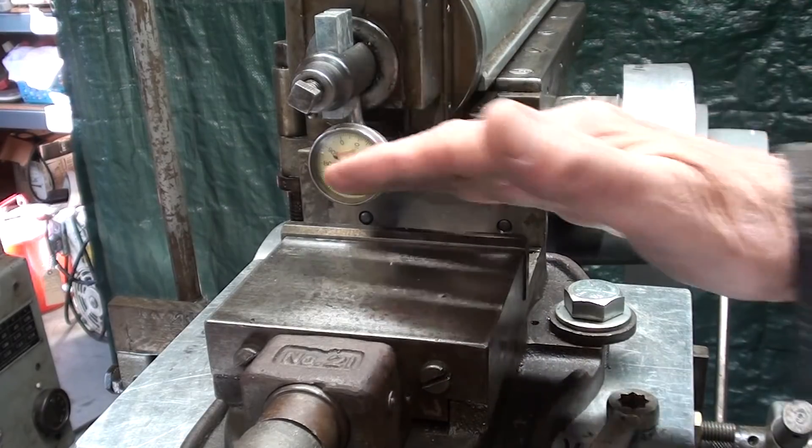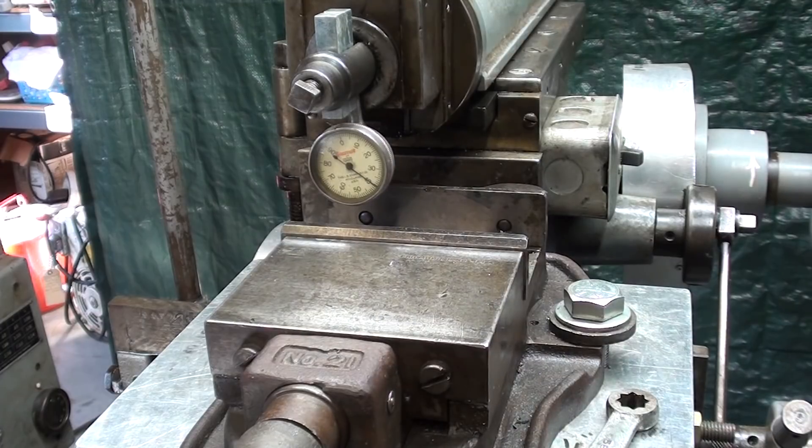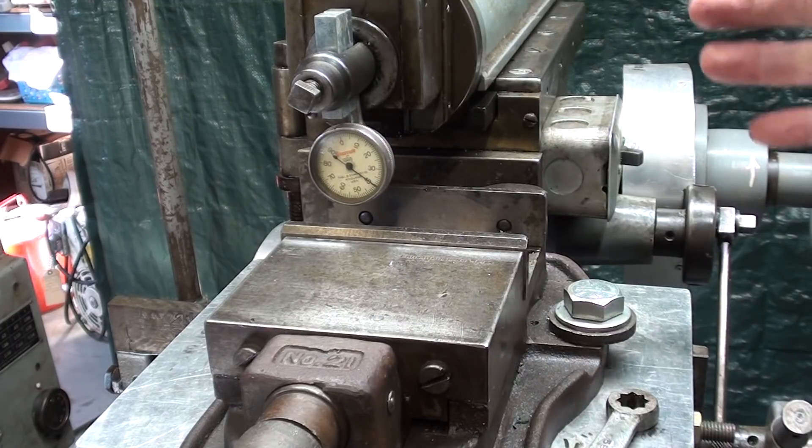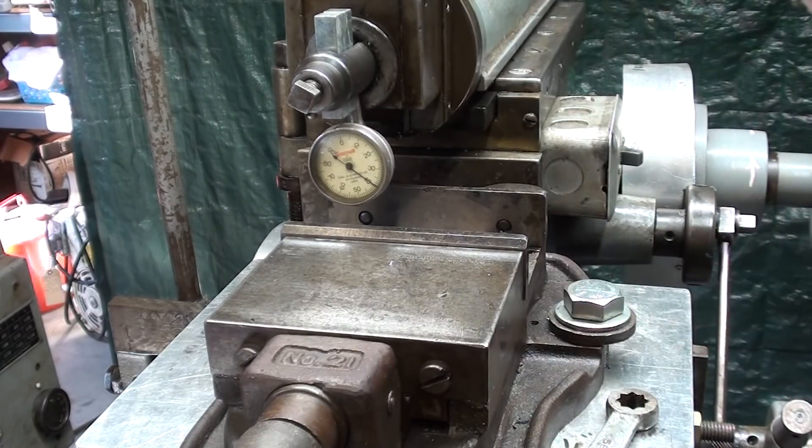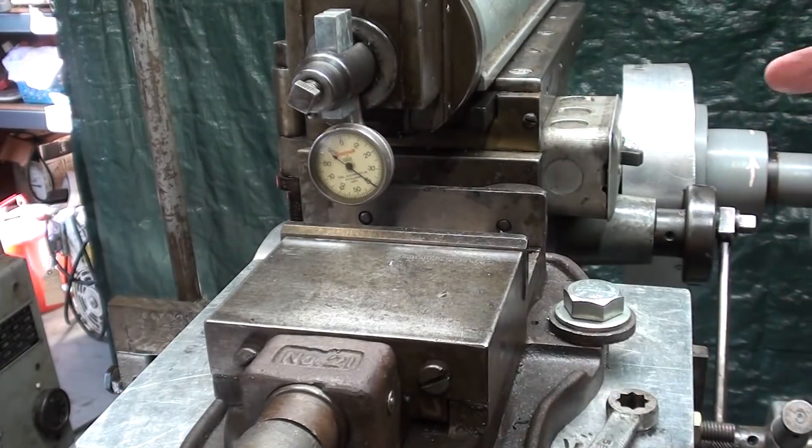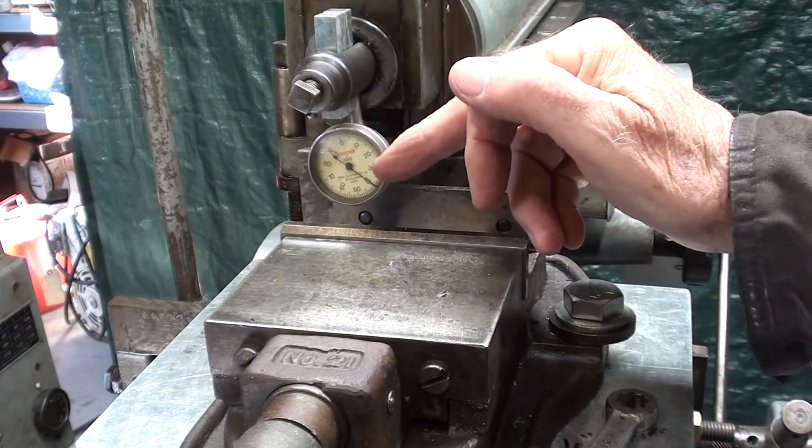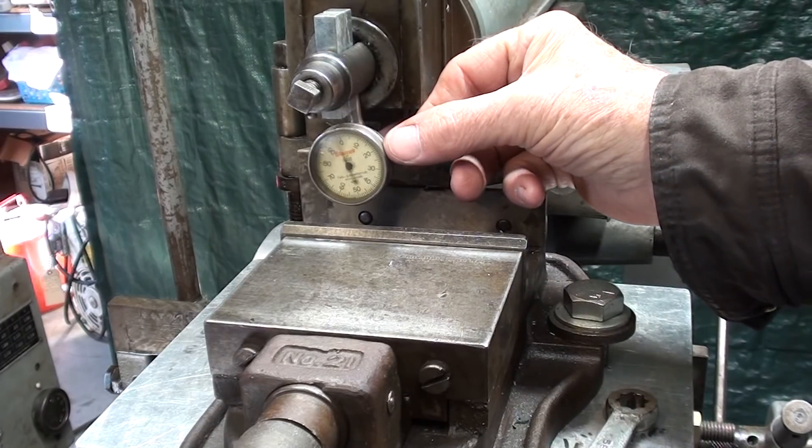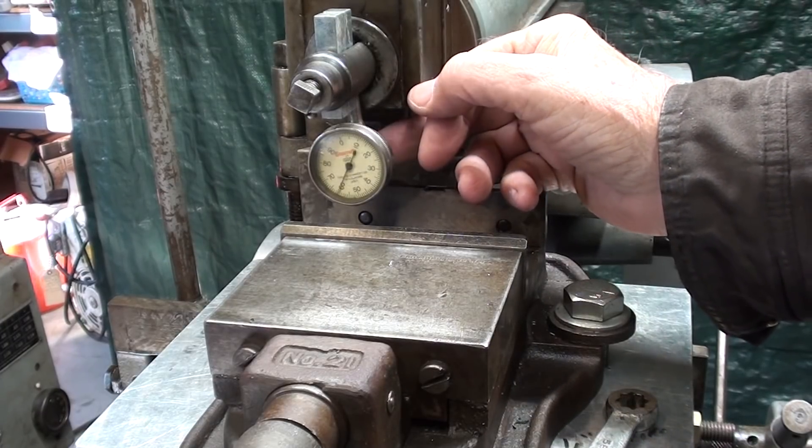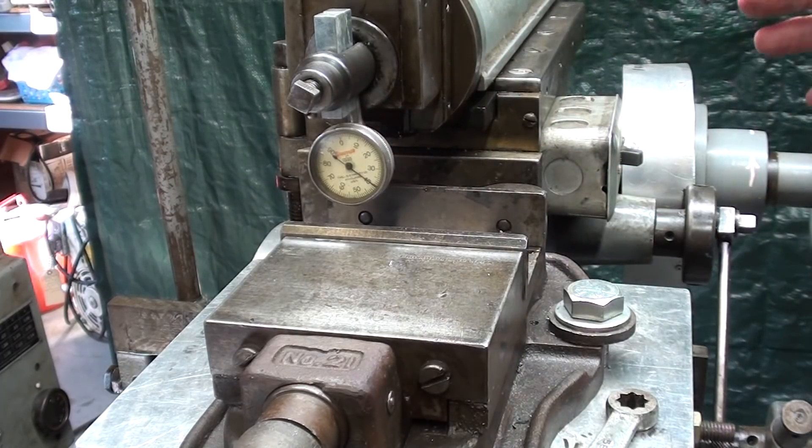Some shapers have a vise that is keyed and will truly be 90 degrees, but on this particular one, no, because this is a Brown and Sharp vise that didn't particularly come with this machine. It's 4-inch range, and I'm going to indicate it in using a little Starrett back plunger indicator. I think a back plunger is the best for this, but that's up to you.